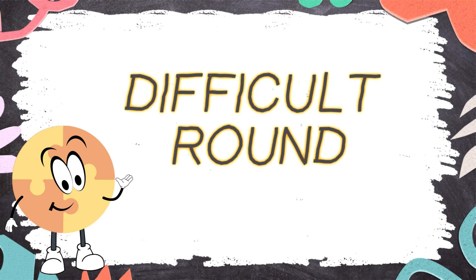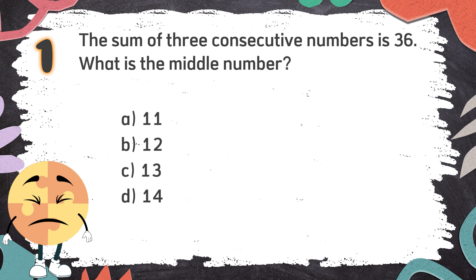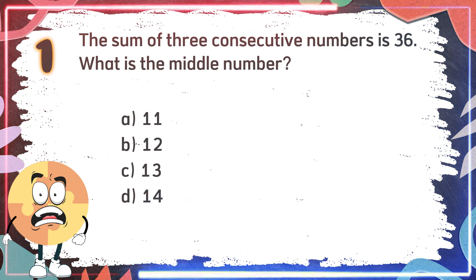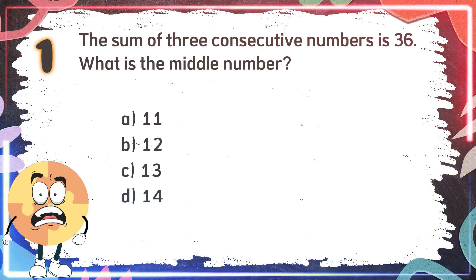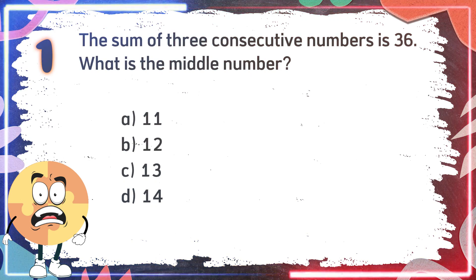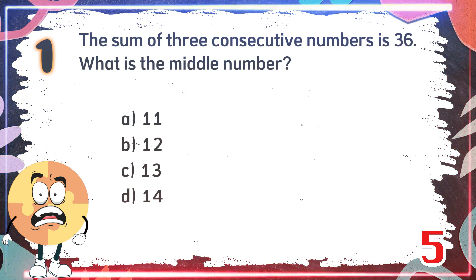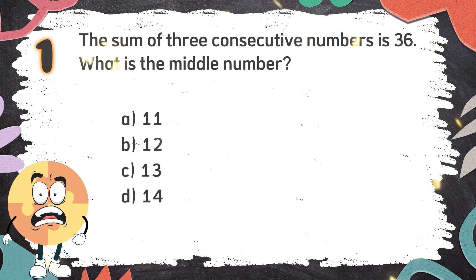Difficult Round. Number 1: The sum of three consecutive numbers is 36. What is the middle number? The choices are: A. 11, B. 12, C. 13, D. 14. The correct answer is B. 12.